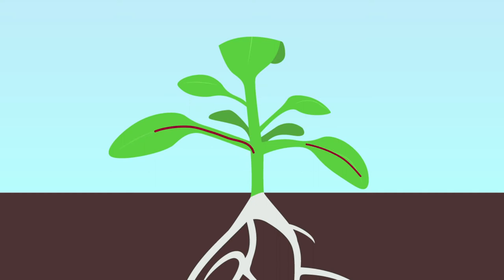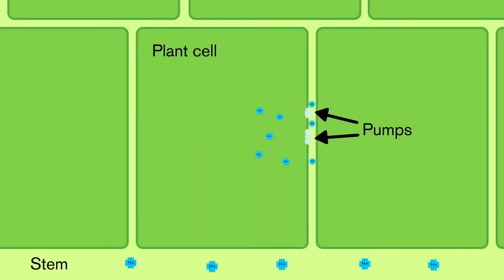In the veins of a plant, proton pumps work hard moving hydrogen ions out of the plant cells. This process generates proton concentration gradients, which are high amounts of hydrogen outside the cell membrane.